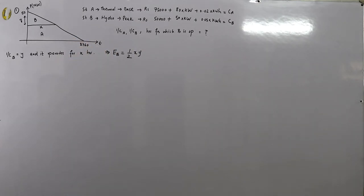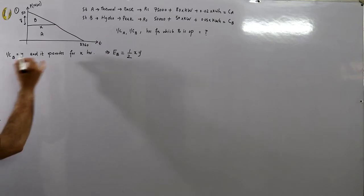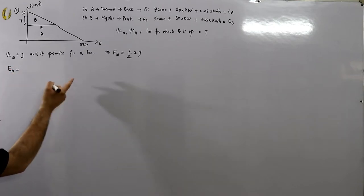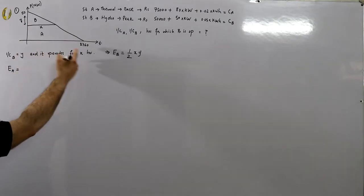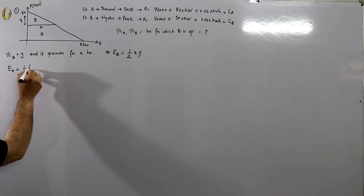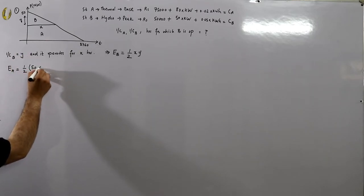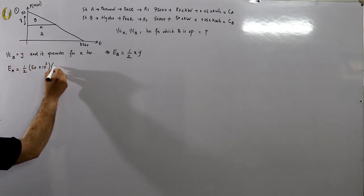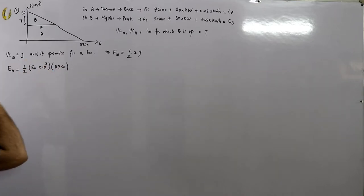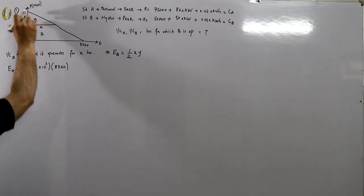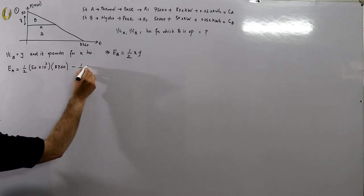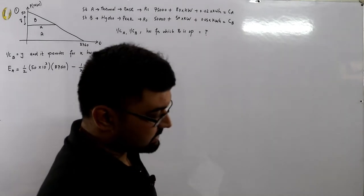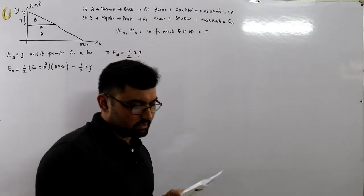The energy delivered by A is the total area minus the triangular area for B: E_A = half × 50,000 × 8760 − half × X × Y, which gives E_A = 219 × 10⁶ − 0.5XY.